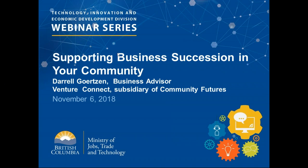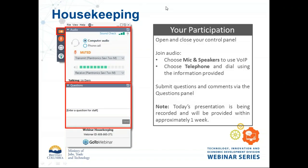Before we go any further, I'll just review some housekeeping items. For those of you who are new to the webinar platform, you have two choices for connecting to audio: you can use your computer audio, or if you're not on a very fast internet connection, you may want to choose telephone and dial in. If you click on the radio button that says phone call on your control panel, it'll give you a phone number, an access code, and a PIN, which will let us identify who you are on the call.